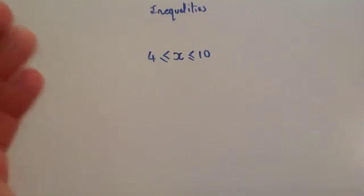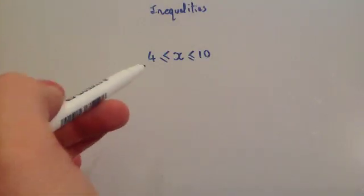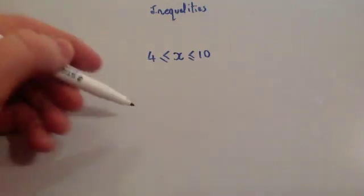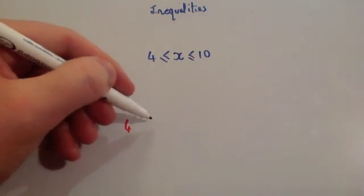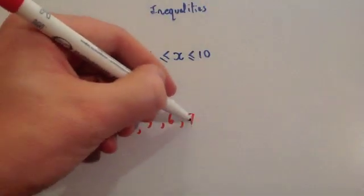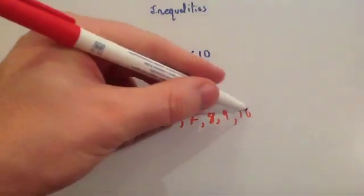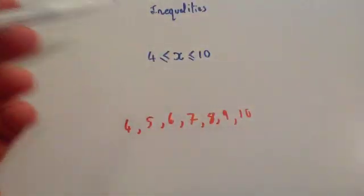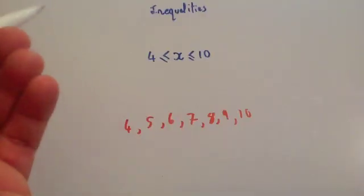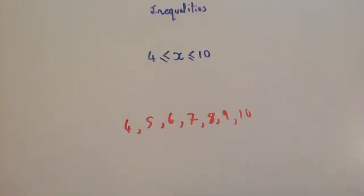If it said that X was an integer — remember, integer means whole number — so if X is an integer bigger than or equal to 4 but less than or equal to 10, then the integers would only be 4, 5, 6, 7, 8, 9, and 10. But if it just says this without specifying integers, it could be any number at all, including decimals, fractions, or rationals — anything in between these two values, including the endpoints.